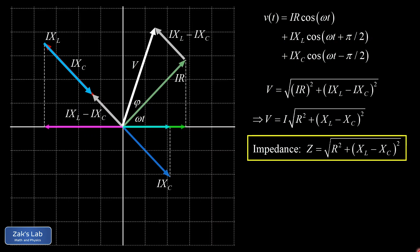Impedance Z is frequency dependent because capacitive and inductive reactances depend on ω. That means current amplitude changes with driving frequency — a topic explored in the next video. Notably, you could choose a special frequency so that X_L and X_C have equal magnitude, causing them to cancel and reduce overall effective resistance. The net voltage amplitude is simply V = I·Z.